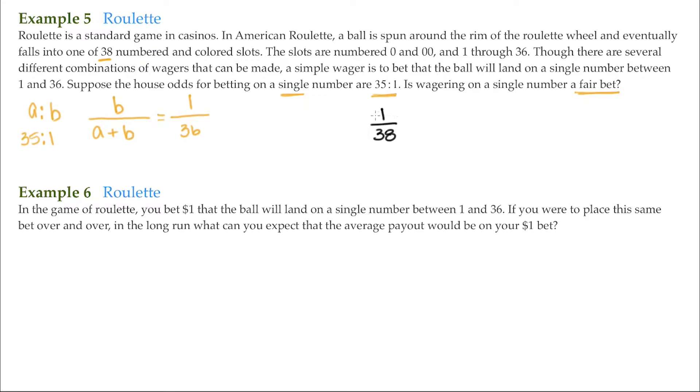So what would the odds be for here? Well, again, we'll do B over A plus B. B is 1. Then A has got to be 37, so 37 plus 1. And if this is A, then the odds, the true odds, are 37 to 1.